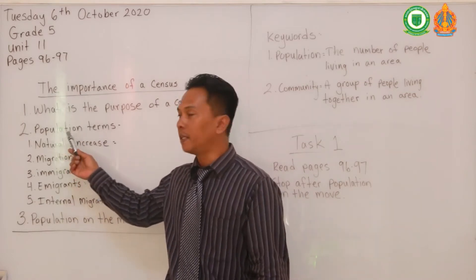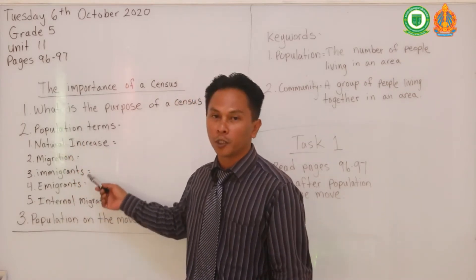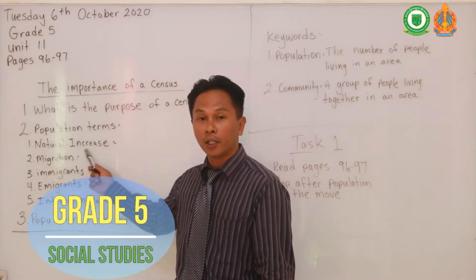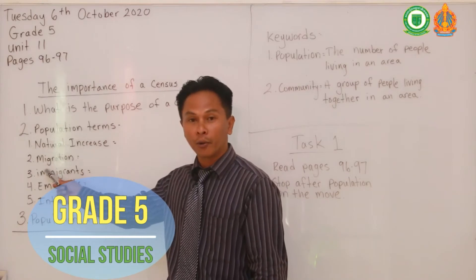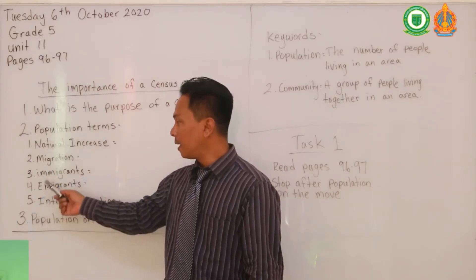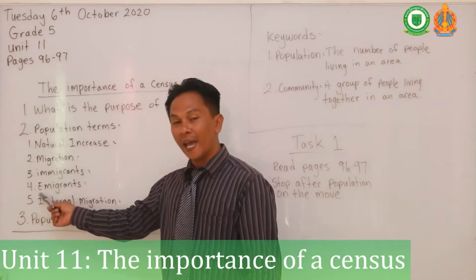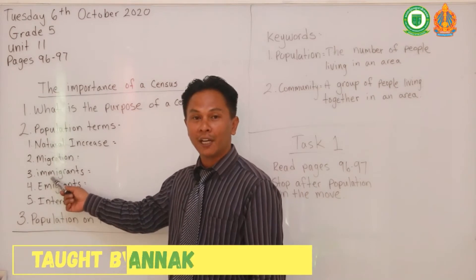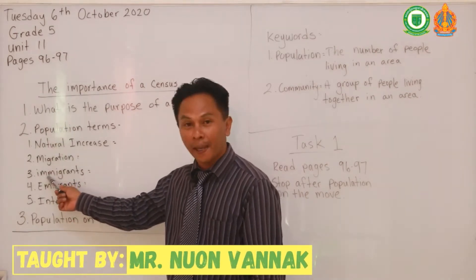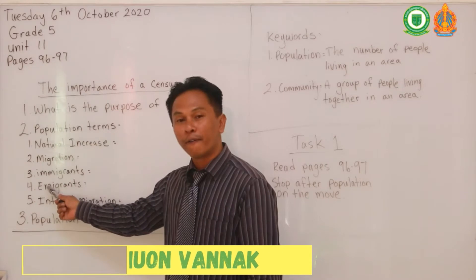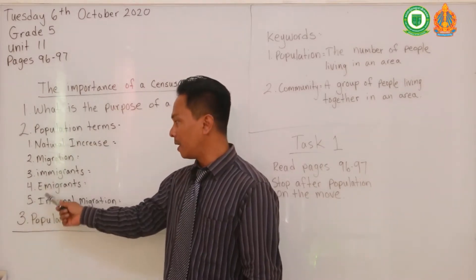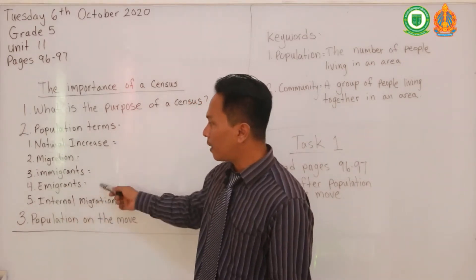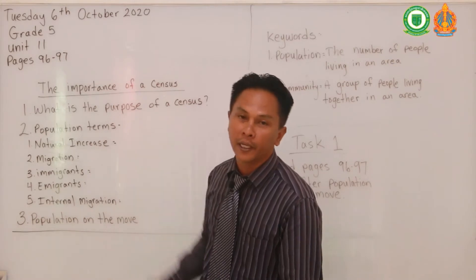Moving along to population terms — there are so many categories but these are only a few. We've got: number one, natural increase; number two, migration; number three, immigrants; number four, emigrants — those two sound almost the same, but they're different; and number five, internal migration.